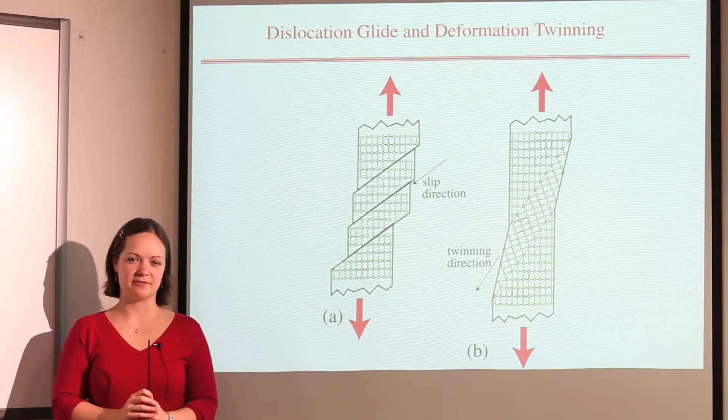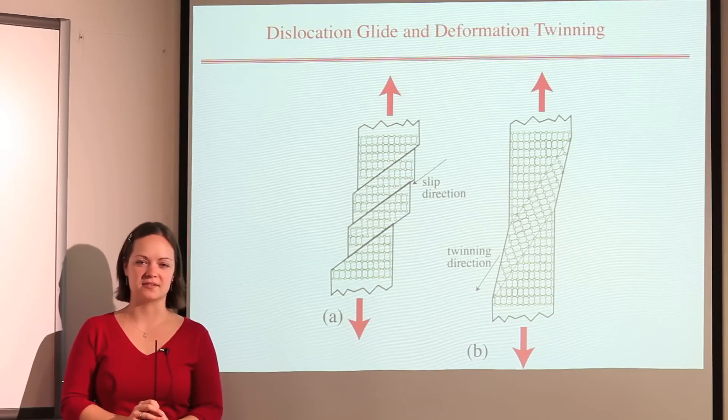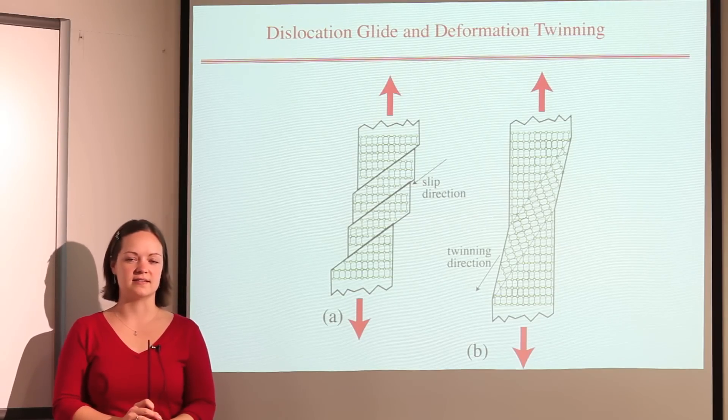In most cases plastic deformation in metals occurs by dislocation motion. However, under certain conditions plastic deformation can occur by deformation twinning instead.